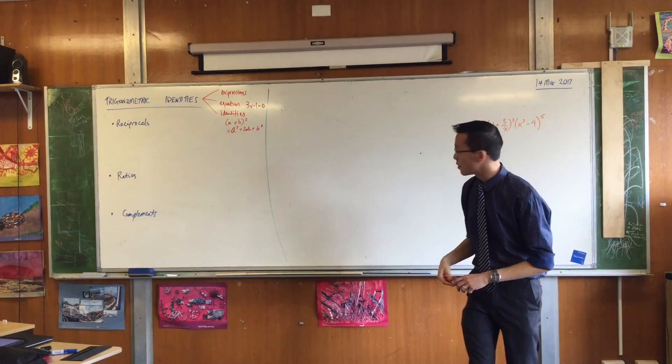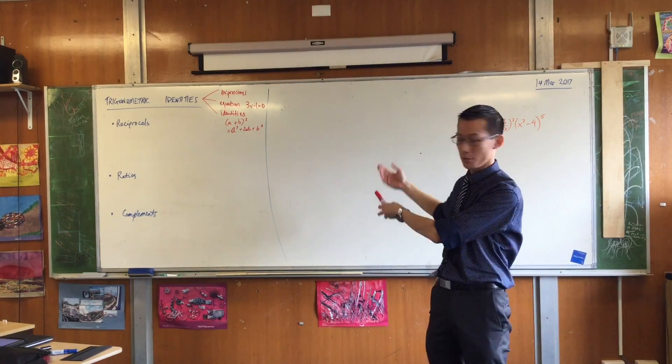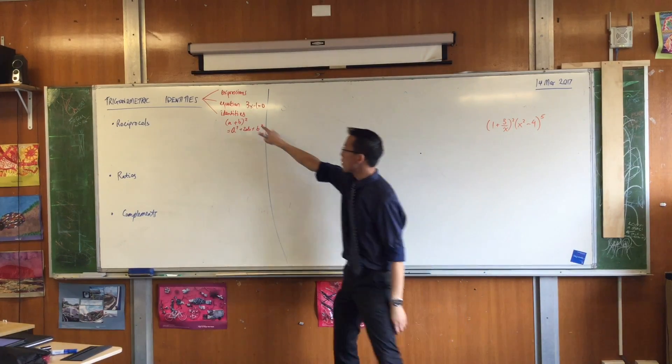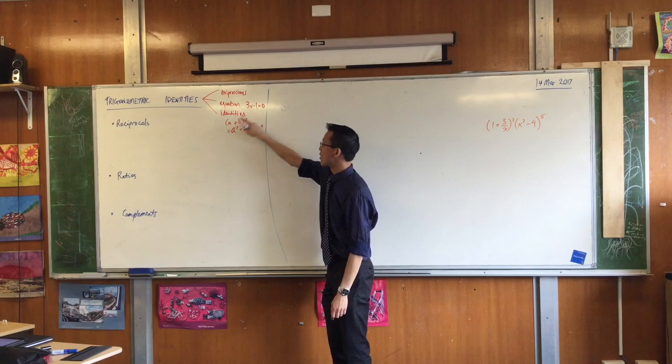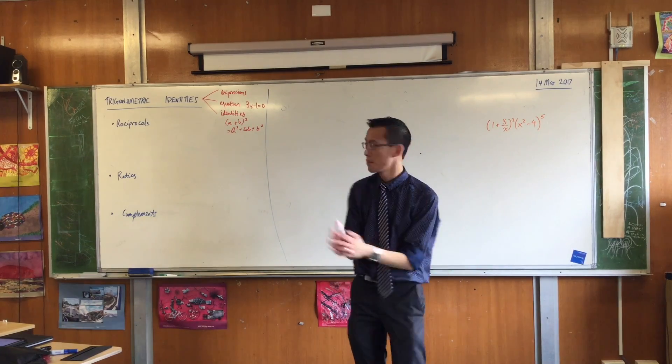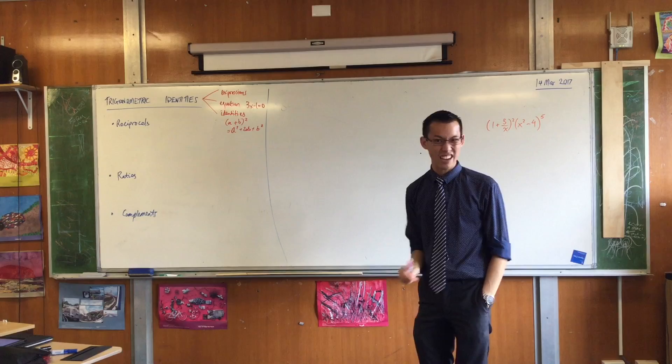If a was one and b was a million, it'd still be true. If a was pi and b was negative three, it'd still be true. Identities are a statement of equality that's like, I don't care whatever you put into me. And in trigonometry, it's exactly the same.